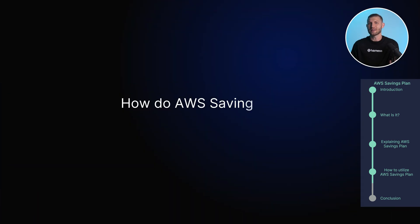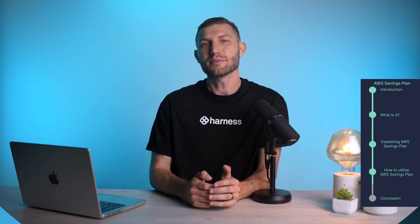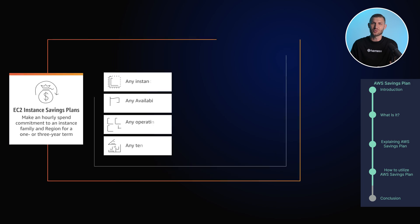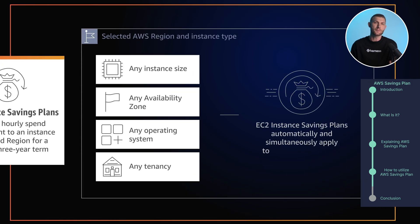How do AWS Savings Plans compare to reserved instances? AWS Savings Plans offer more flexibility in terms of instance family, region, and operating system. This means you can apply the savings across different EC2 instance types and regions, making them ideal for workloads with variable or unpredictable usage patterns.